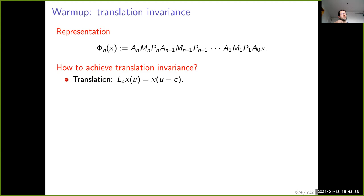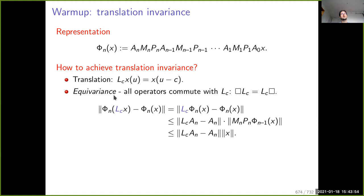The first question: how can we achieve translation invariance? Translation invariance means we consider a diffeomorphism that is a translation. It is relatively easy to see that all operators — patch extraction, pointwise mapping to the RKHS, and pooling — commute with a translation. If you extract a patch before or after a translation, you get the same patch. Similarly, a pointwise operation commutes with translation, and the same holds for pooling.